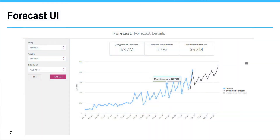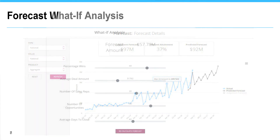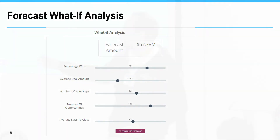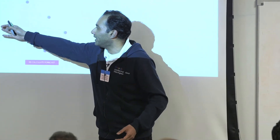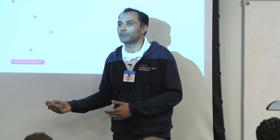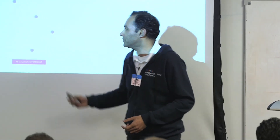Here are a couple of screens from the Force.com application. We also do what-if analysis — because we've used machine learning, we're able to give users the ability to figure out what happens if they take a certain action. For example, what happens if I increase the number of sales reps? In what way does it increase my revenue? And so on and so forth.